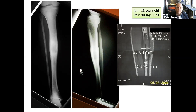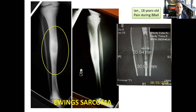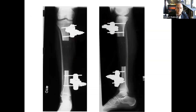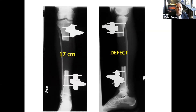These are x-rays of Ian, who at the age of 18 developed pain in his leg when he was playing basketball, and after biopsy was diagnosed with a Ewing's sarcoma. This was addressed by a radical excision of the tumor, leaving a 17-centimeter bone defect and temporarily stabilized with an external fixator.